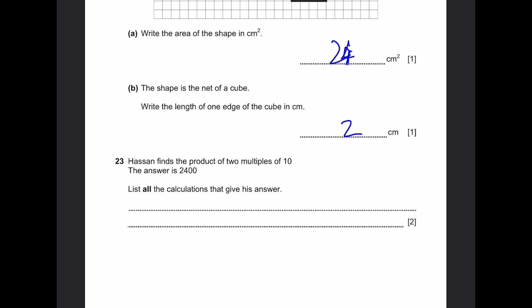Question 23. Hassan finds the product of two multiples of 10. The answer is 2,400. Write all the calculations that give his answer. So two multiples of 10 form 2,400. So first thing we can think of is 10 into 240. Then we can go forward with 20 into 120. 30 into 80. And 40 into 60. And is there any more? No. This is it. So these are the four calculations. Since the next one is 50, but that doesn't work since the other one will not be a multiple of 10. In reality, it's 50 into 48. But 48 is not a multiple of 10, right? And after that, it's 60. But we already have 60 here. So that's it.